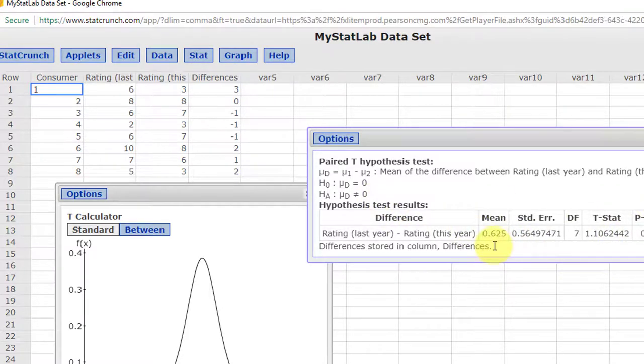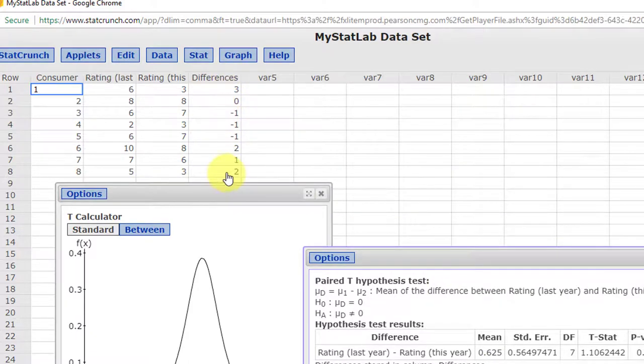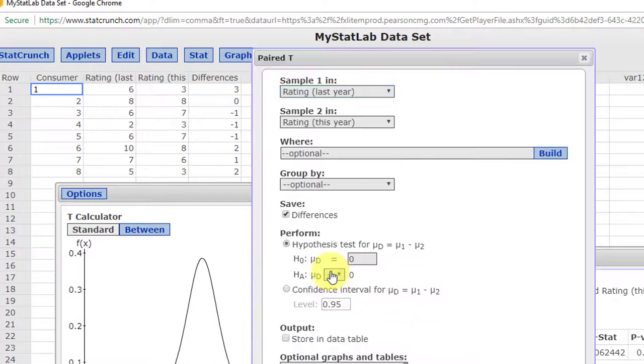It does not give us S sub D, the standard deviations of the differences. And that's the reason that I saved the differences. And here we recall, when we ran the test, I checked that little box there to have us save the differences.